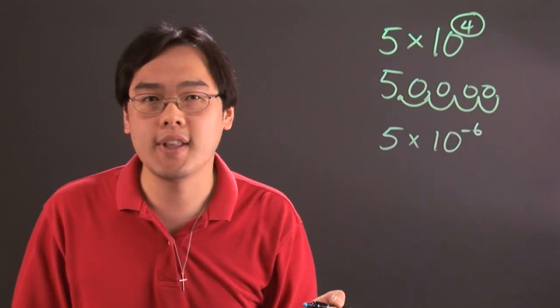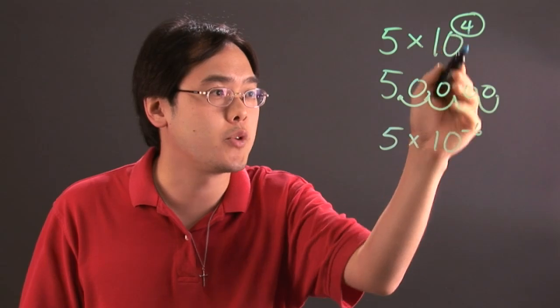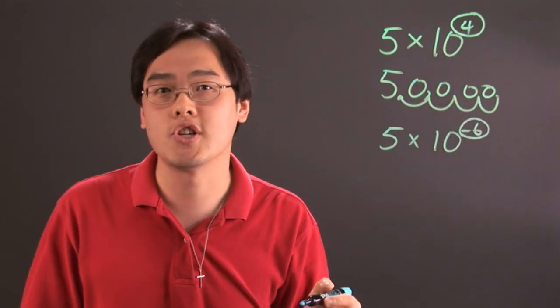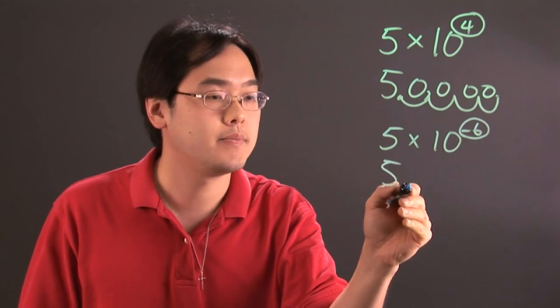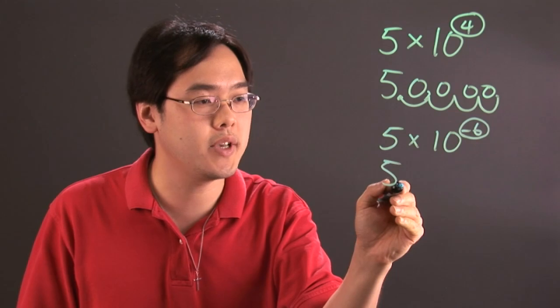what that tells you here is if it's a positive exponent, you're going to shift the decimal to the right. If it's a negative exponent, you're going to shift the decimal to the left. So you have 5, you're going to start here, and you're going to be shifting to the left six places.